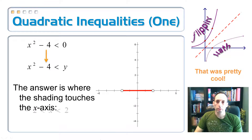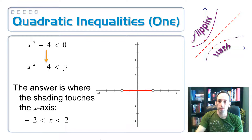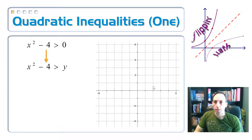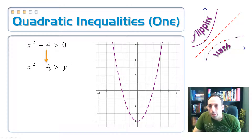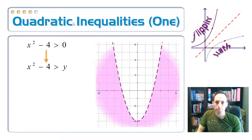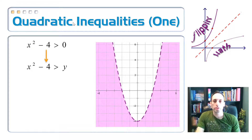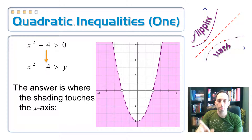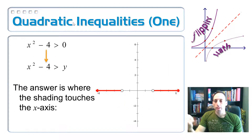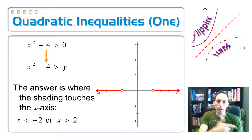The answer collapses to: −2 < x < 2, which is an 'and' inequality — matching the less-than sign. Now flip it: x² − 4 > y. This time y is below the quadratic, so shade below the parabola. The shading on the x-axis gives two rays going outward with open circles at the x-intercepts. The answer is x < −2 or x > 2 — an 'or' inequality.